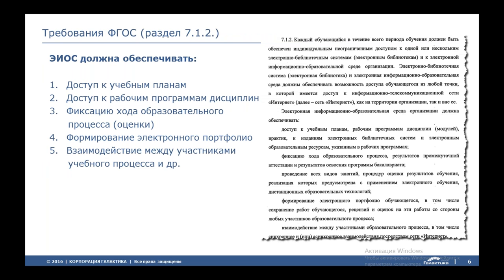Чуть-чуть подробнее про требования ФГОС. Во всех ФГОСах на сегодняшний день есть пункт 7.1.2, где предъявляются требования к электронной образовательной среде. Студенты из любой точки мира, где есть интернет, должны иметь доступ к своим учебным планам, к рабочим программам дисциплин, формировать индивидуальную траекторию обучения — то есть осуществлять выбор дисциплин вариативной части, формировать электронное портфолио, взаимодействие с другими участниками. Все эти задачи позволяет решить наш корпоративный портал.